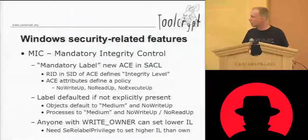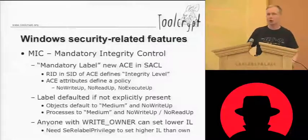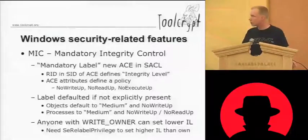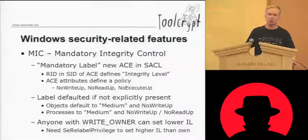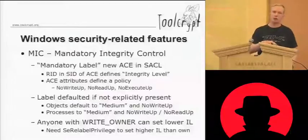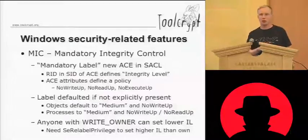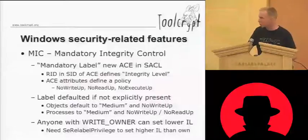The attributes in the access control entry specify a policy that can be one of: no-write-up, no-read-up, or no-execute-up. Protected Mode Internet Explorer only uses the no-write-up policy, which means a process running under a lower integrity level cannot write to objects tagged with a higher integrity level than low — which is what Protected Mode IE runs as.